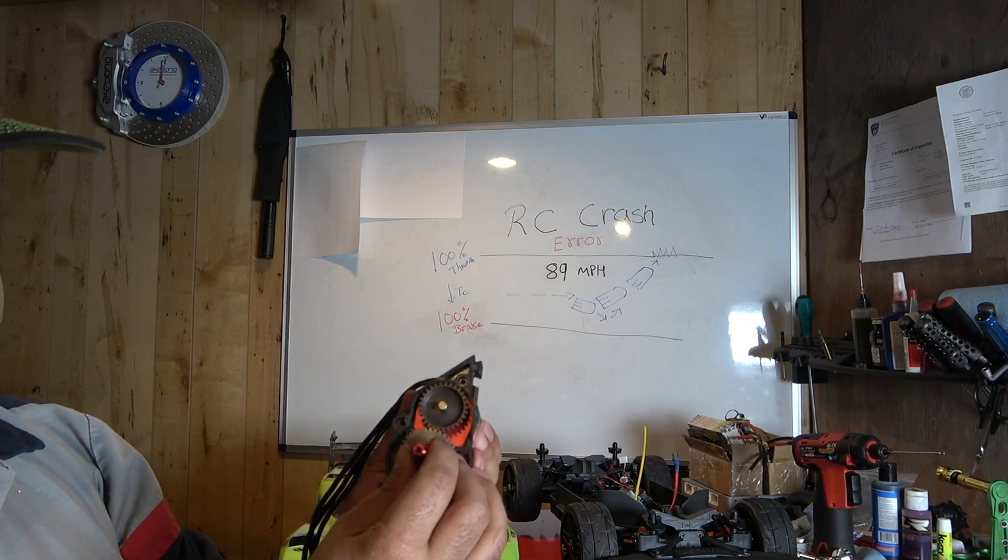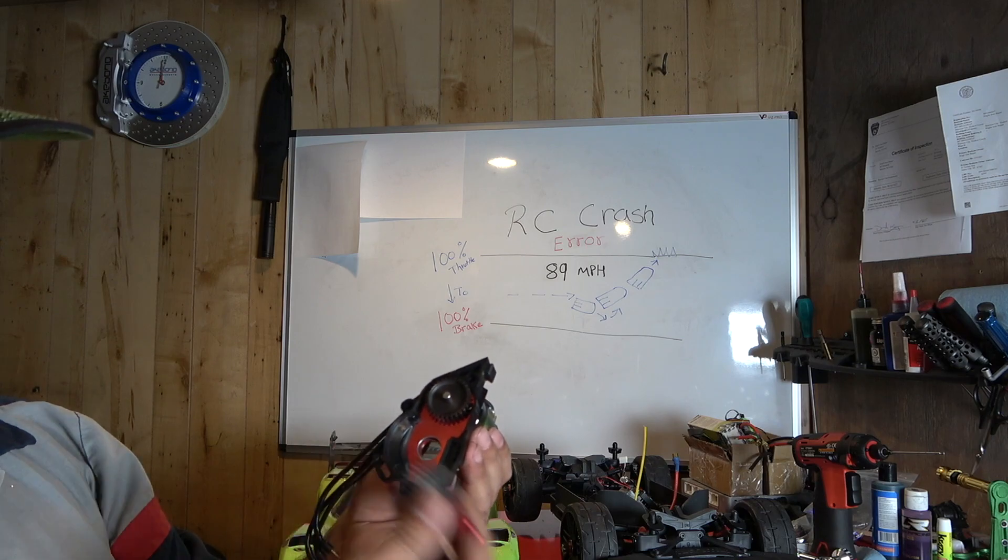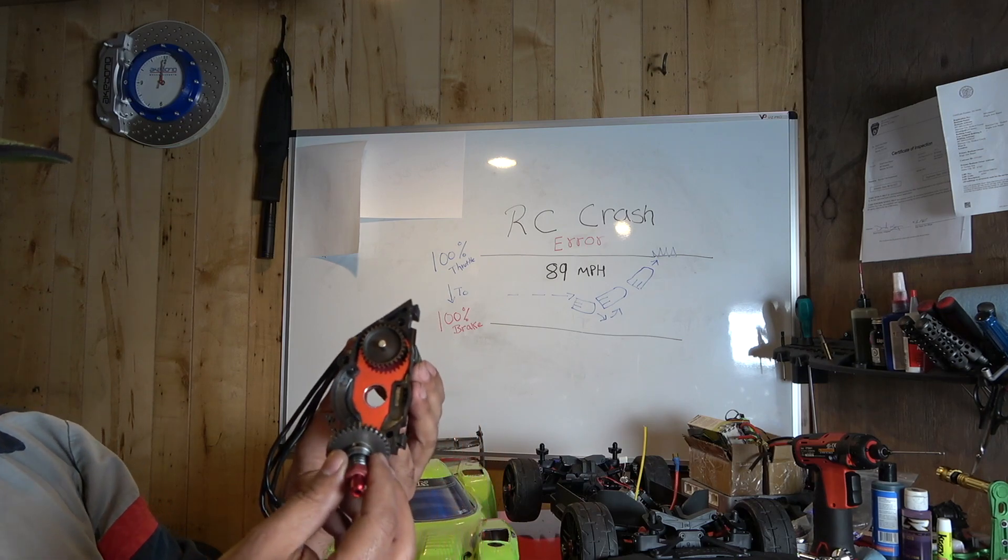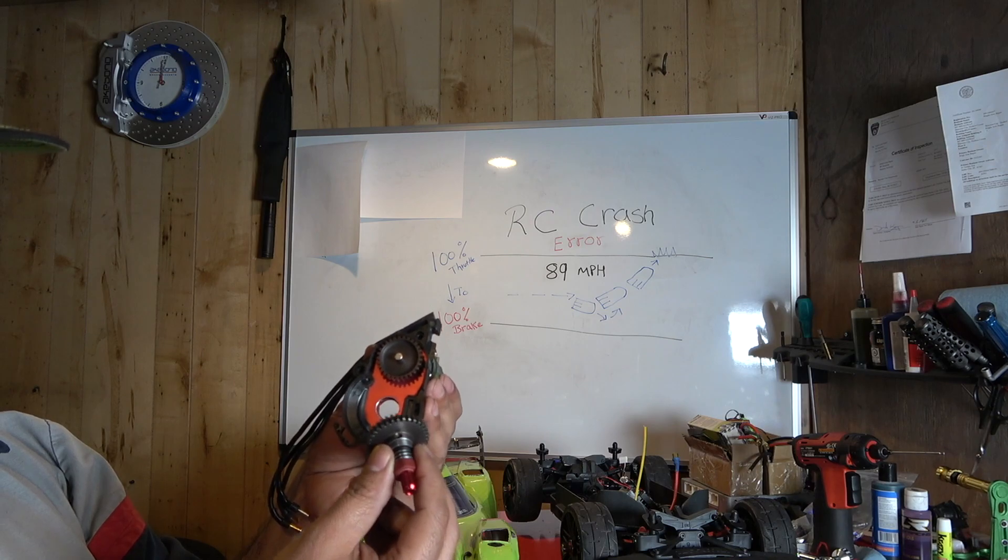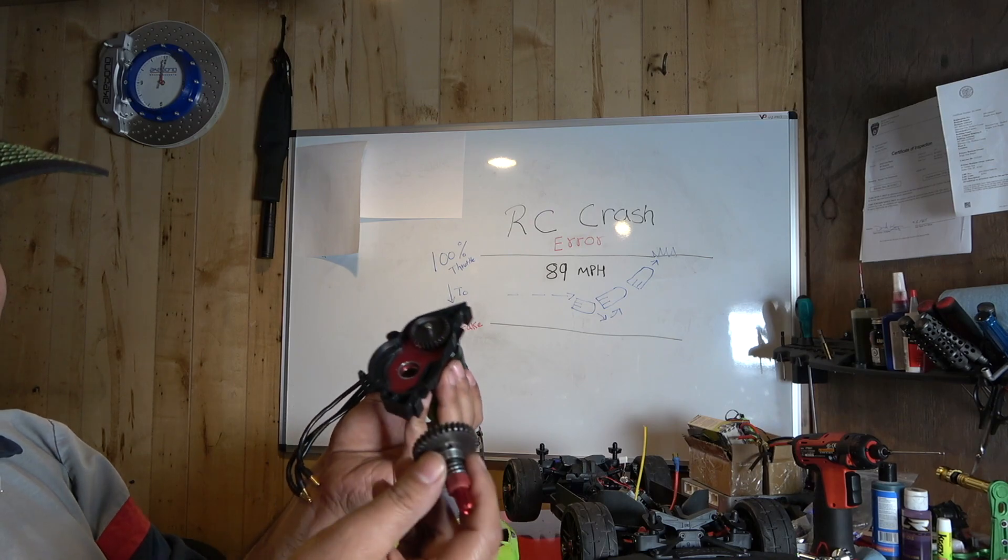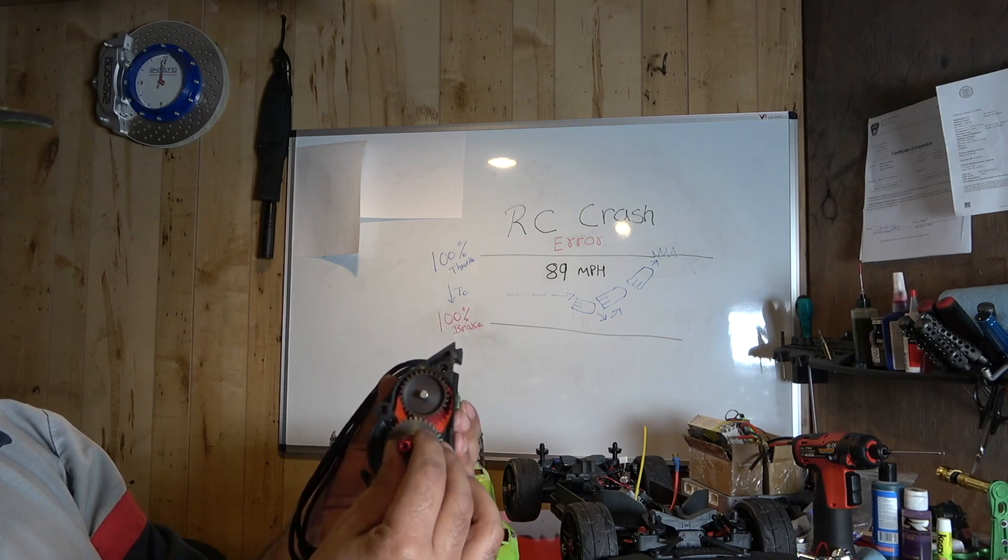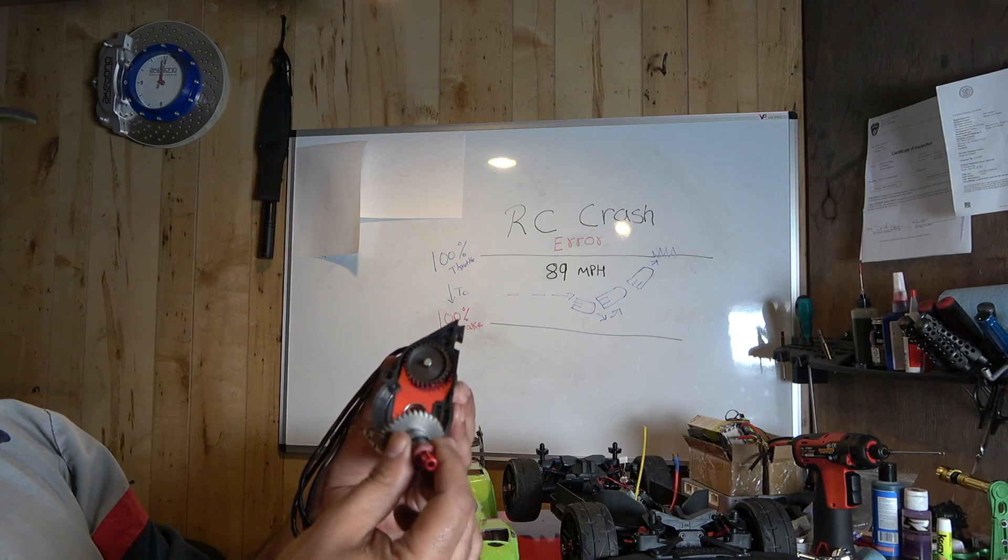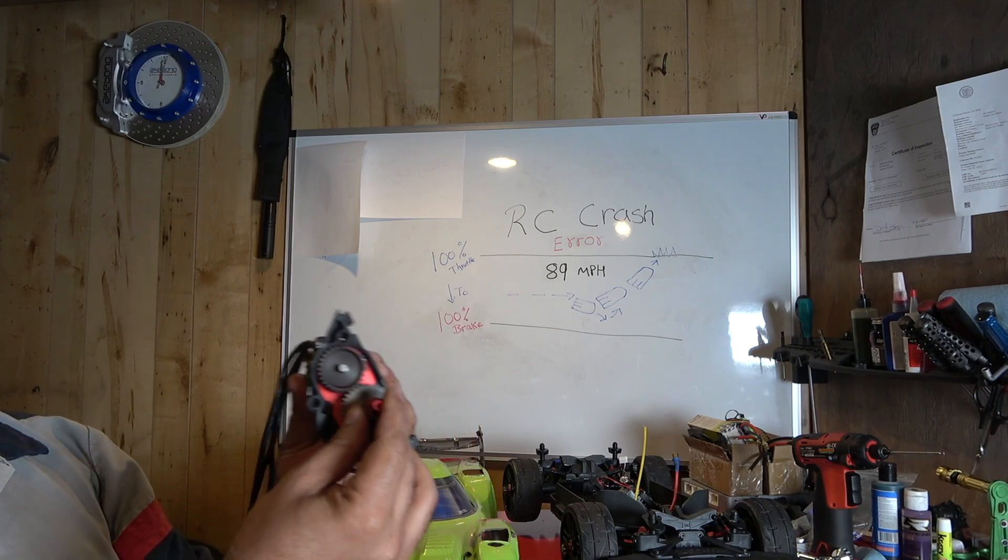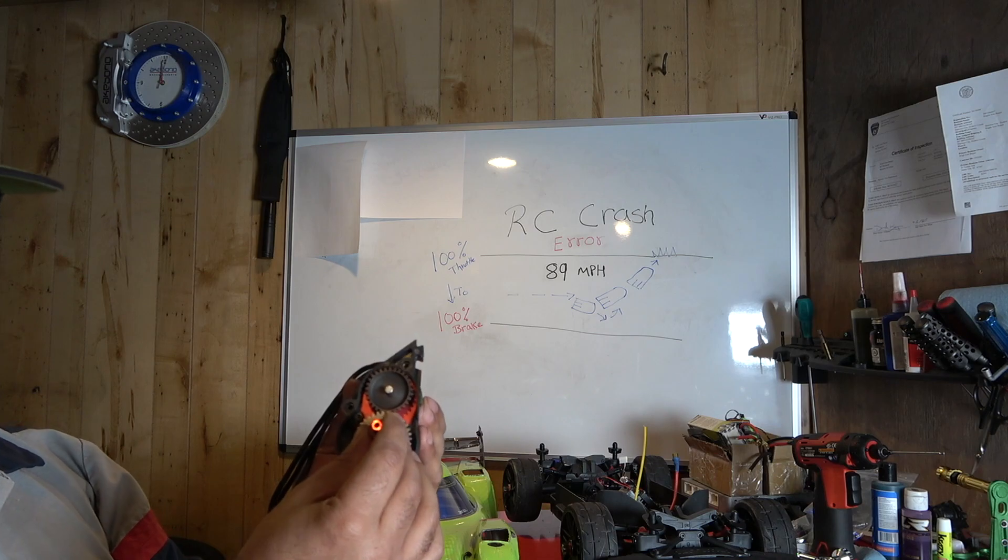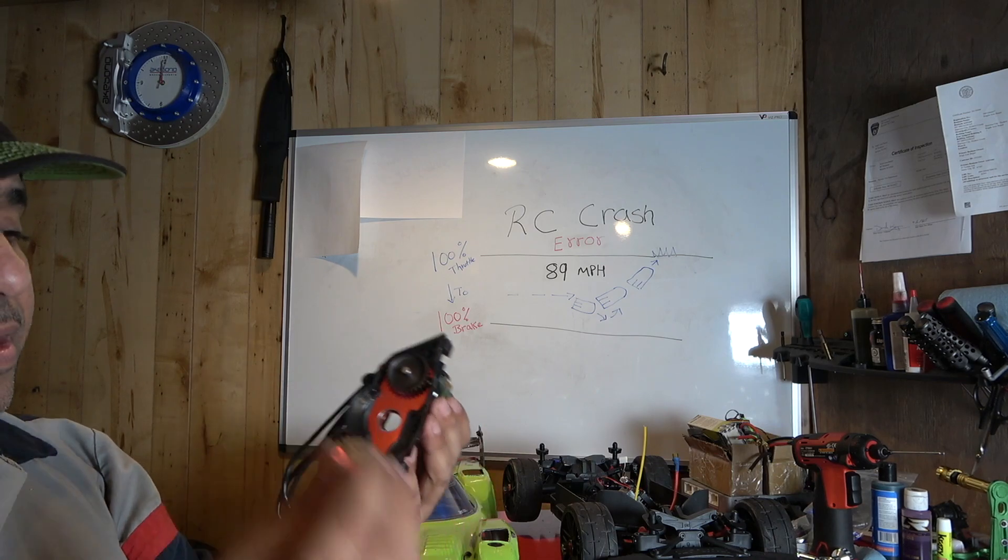But anyways, on my Big Rock it's a 29T pinion - that's one-to-one ratio. I have in these 32/34, that's almost one-to-one. That's gonna give it instant brake. Even though I had that thing at 60-70%, and then I brought the brake down and the car acted better.